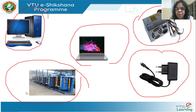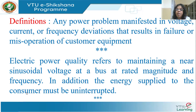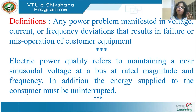We will now go ahead and see how this is going to affect the concept of quality — what is the concept of quality and how is it going to be affected. Any power problem manifested in voltage, current, or frequency deviations that results in failure or misoperation of customer equipment is said to be a problem of power quality. Any power problem manifested in deviations from the normal prescribed values — deviations from the nominal definition — in voltage or current or frequency which results in failure of equipment or misoperation.